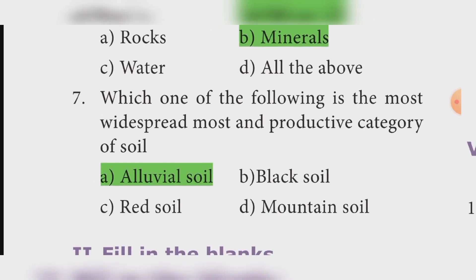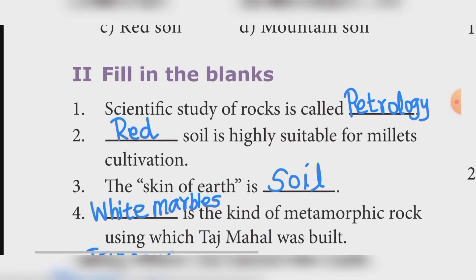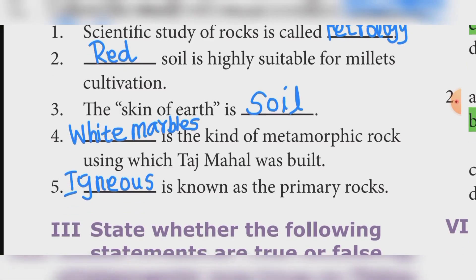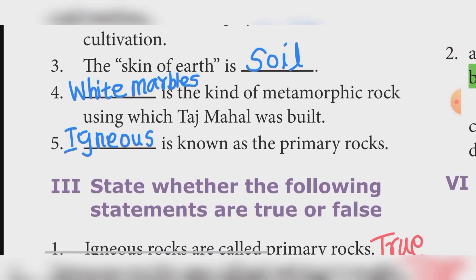Fill in the blanks. Scientific study of rocks is called Petrology. Red soil is highly suitable for millet's cultivation. The skin of Earth is Soil. The kind of metamorphic rock used to build the Taj Mahal is White Marble. Igneous rocks are known as the primary rocks.